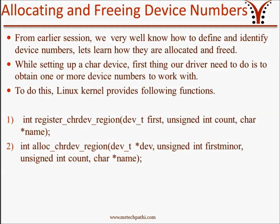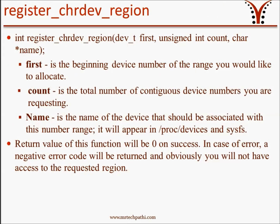The first function is register_chrdev_region, and the second function is alloc_chrdev_region. Let's discuss these two functions in detail. The first function, register_chrdev_region, takes three arguments and returns a value of type int. The first argument is 'first', which is of type dev_t structure. 'First' is the beginning device number of the range you would like to allocate. If you know your device number, it can be assigned to 'first' and passed as the first argument to this function.